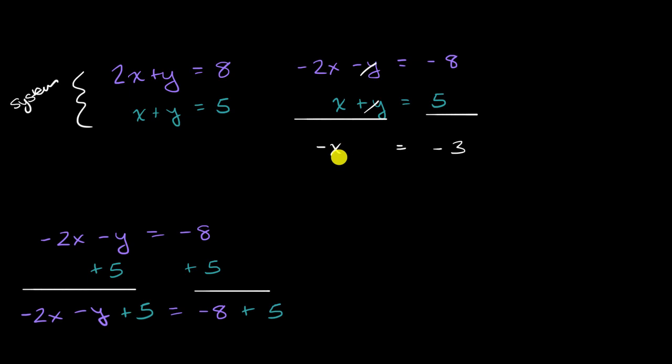And then from there, you can just do a valid algebraic operation. You could say, okay, I just want an x over here. What if I were to divide both sides by negative one? And once again, because -x = -3, if I divide -x by -1, I also have to divide -3 by -1 in order to maintain the equality, and so then you're going to get x = 3.